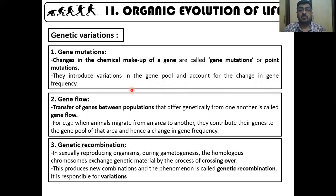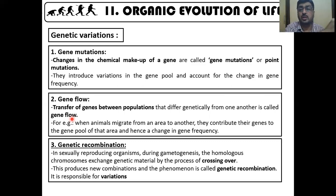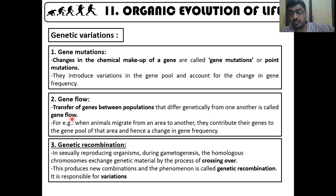Gene flow occurs when an organism migrates from one population to another. For example, if organism A has a population in one area and also in another area, when an organism moves from one population to another, there is a transfer of alleles between the two gene pools. This transfer is called gene flow, and it can bring about a change in the gene frequency of an area.